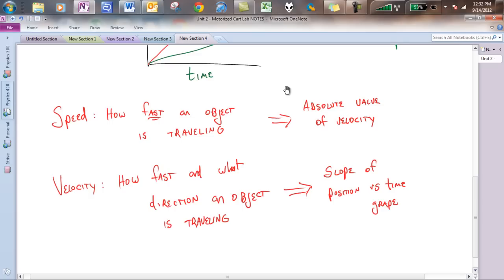The key idea is when we were looking at our graphs, we saw how fast and we saw what direction, which, in conclusion, we can say that the slope of the position versus time graph is velocity. So the key idea here is velocity. To get the velocity, all you have to do is look at the slope because it does tell you direction and how fast.